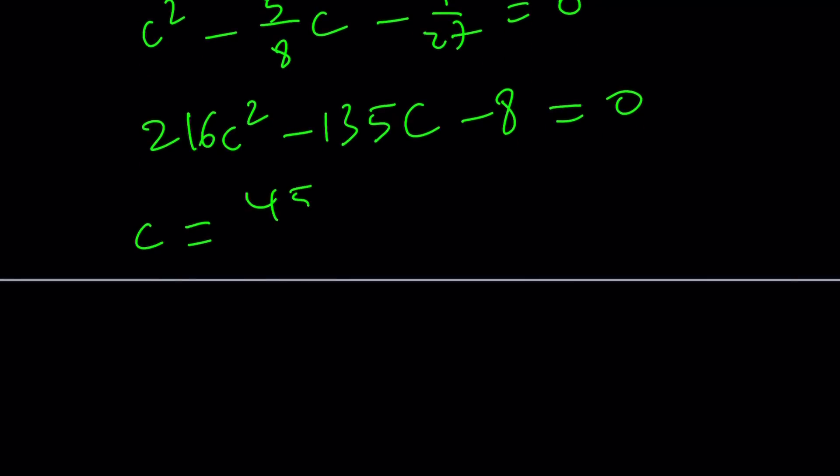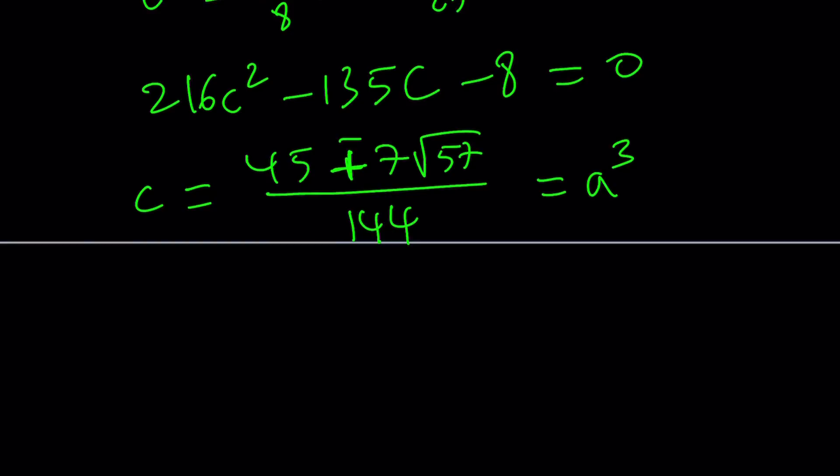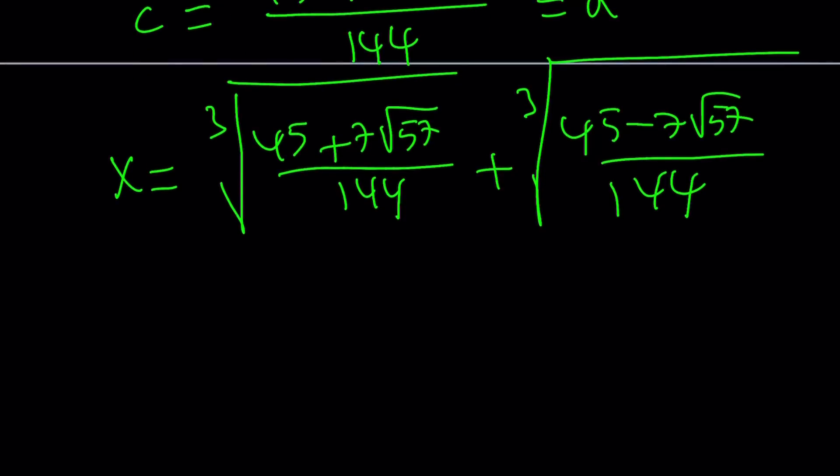But here's the solutions. 45 plus minus 7 times the square root of 57 divided by 144. And you're like, what? Are you serious? And a cubed is c. So this is a cubed. Take one of the solutions. Doesn't matter which one because a plus b, you know, is commutative. So from here, a becomes the cube root. So a becomes one of the cube roots and b becomes the other cube root. So to keep a long story short, x becomes the cube root of 45 plus 7 times the square root of 57 over 144 plus the cube root of 45 minus 7 times the square root of 57 over 144. It's fun, isn't it? And guess what? If you simplify this expression, you get x equals 1 half.